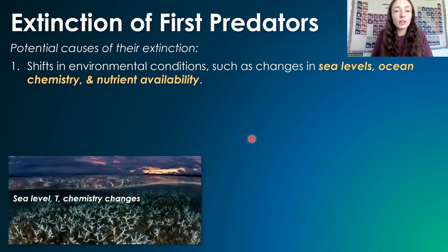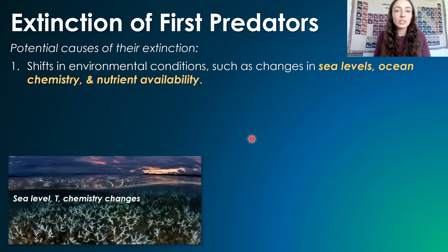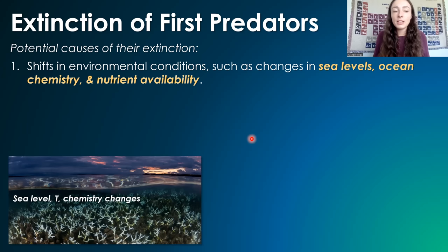Anomalocaridids did occupy diverse ecological niches, but they were very specialized in what they did — how they hunted, how they lived, and what role they played in those niches. This specialization to one type of living behavior might have contributed to their susceptibility to environmental changes.